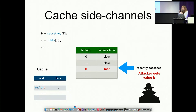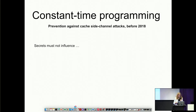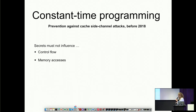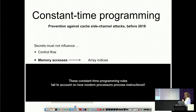Cache attacks have existed for some time, and we know how to defend against them. The defense is called constant-time programming — a simple set of two rules. First, secrets in programs, cryptographic libraries in particular, should not influence the control flow of a program. Second, secrets should not influence memory accesses — in particular, secrets cannot be used as array indices. These constant-time rules were used in cryptographic libraries, and we thought everything was fine until 2018, when we realized that constant-time programming rules failed to account for how modern processors actually compute and process instructions.